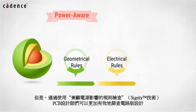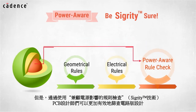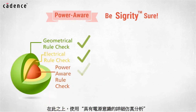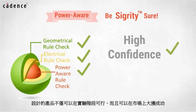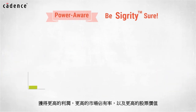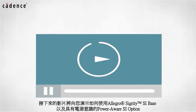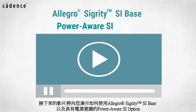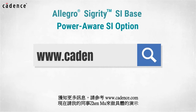But now, with the power-aware rule checks available in Sigurity technology, PCBs can be more effectively screened by the PCB designers. Combined with power-aware detailed simulation, design teams can have high confidence that their designs will not only work in the lab but will also work long term in the field. The result may likely be higher profits, higher market share, and even higher stock prices. In today's video you will see us utilize the Allegro Sigurity SI-based and power-aware SI option. To learn more about these products, visit us at www.cadence.com.